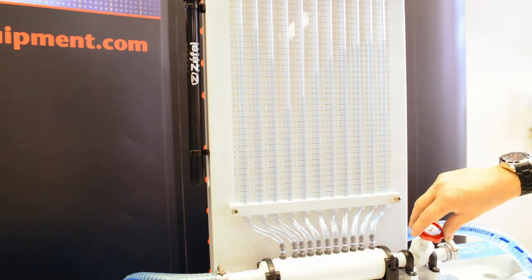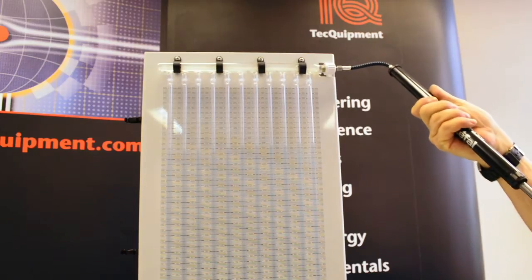A manometer panel holds the manometer tubes vertically. A common manifold above the tubes has an air pressure control valve.